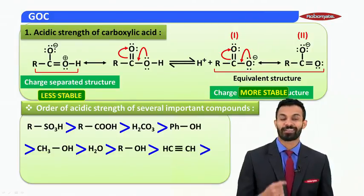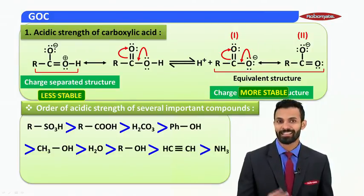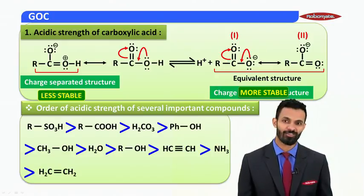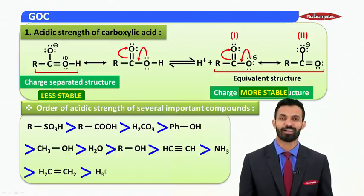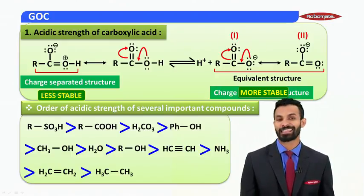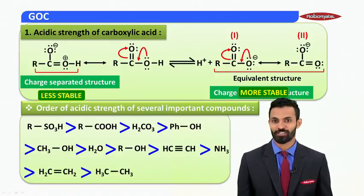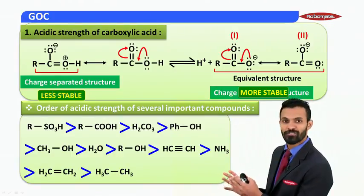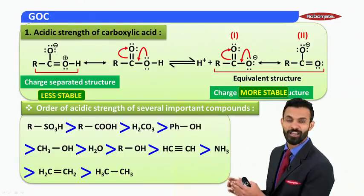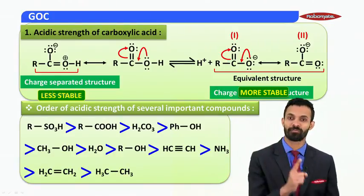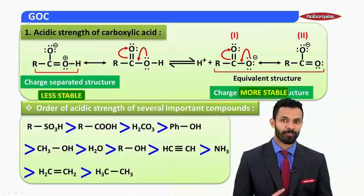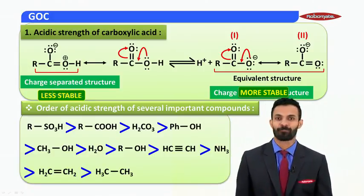After water and other alcohols, we have alkyne, then ammonia, then alkene, followed by alkanes. This is the order of acidic strength of several compounds, and you need to remember this.